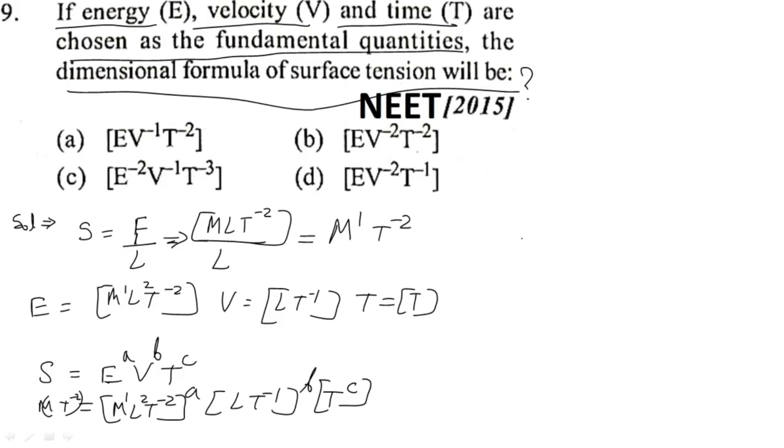We would have the equation like M¹ L⁰ T⁻² and equating right here M^a L^(2a+b) T^(-2a-b+c).